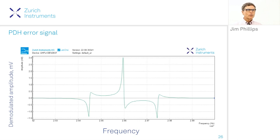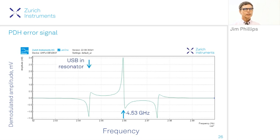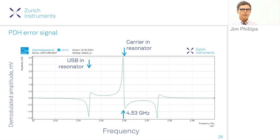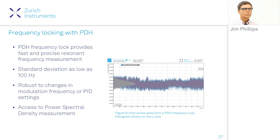Here is actual data: the first-order Fm demodulation — the PDH error signal — with frequency modulation sweeping from low to high frequency. The resonance is at 4.53 GHz. When the upper sideband first interacts with the resonator, we get the first feature; the carrier interaction gives the strong central feature used for PDH locking; then the lower sideband gives the last feature. The spacing is the modulation frequency, 150 kHz. Time-series data of locked frequency fluctuations shows a standard deviation as low as 100 Hz over about five minutes of data.